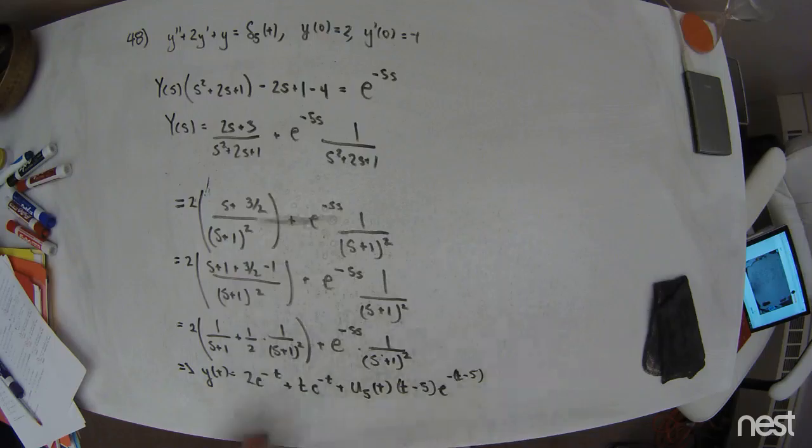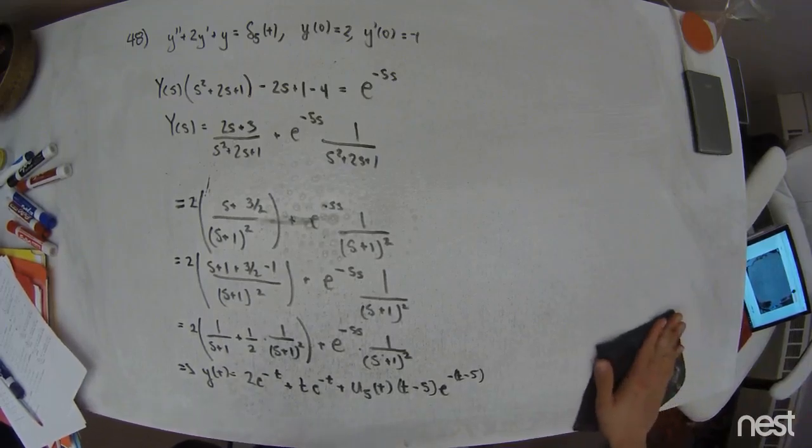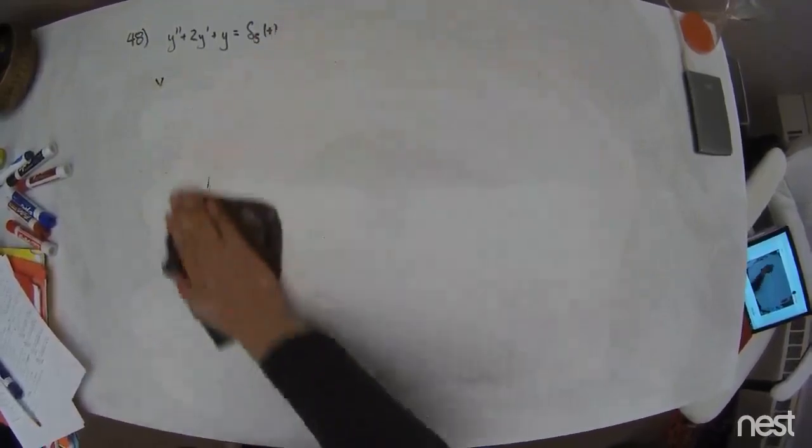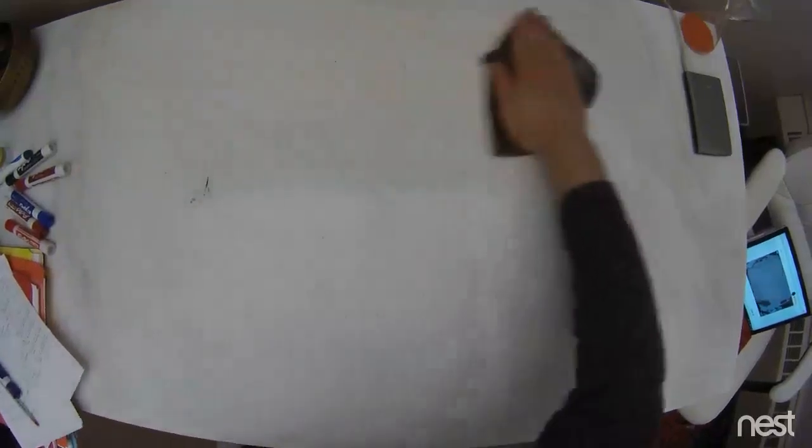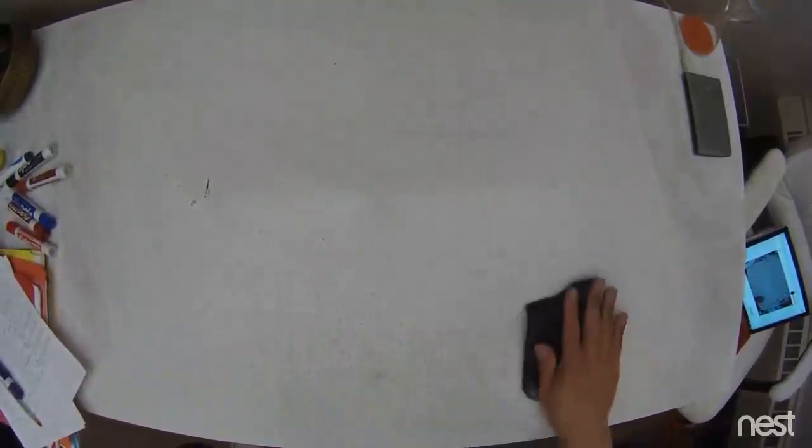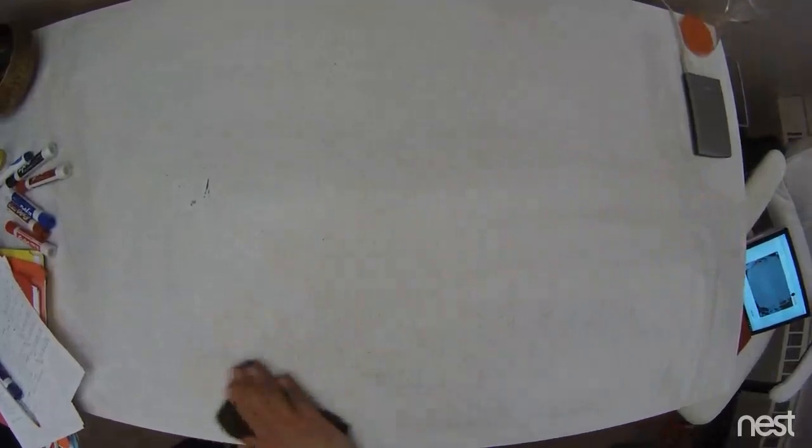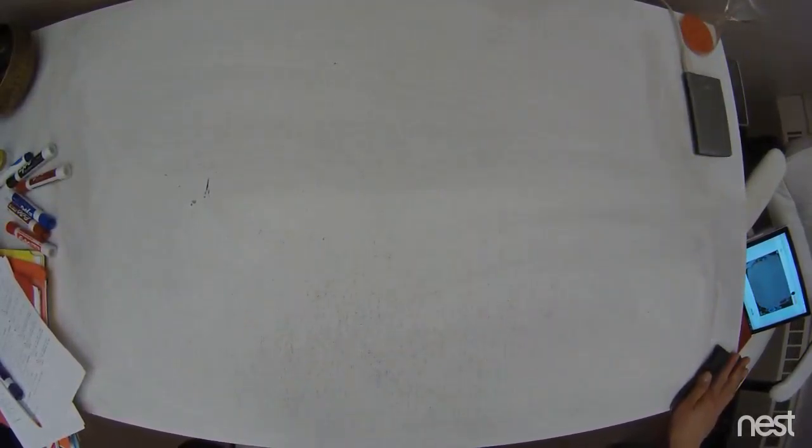I guess one thing that I can say is that this part right here has to do with the homogeneous solution due to the initial conditions. You can track its existence back. This has to do with the hammer strike. And evidently, the hammer strike excites the second of the two homogeneous solution types, the TE to the negative T. The reason for that is because a hammer hit like that basically is related to velocity terms.